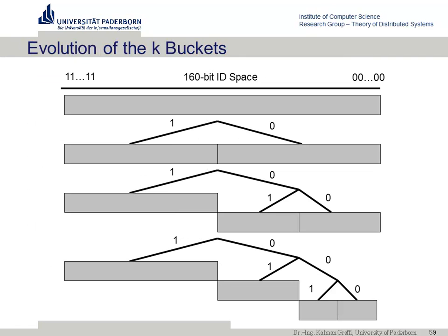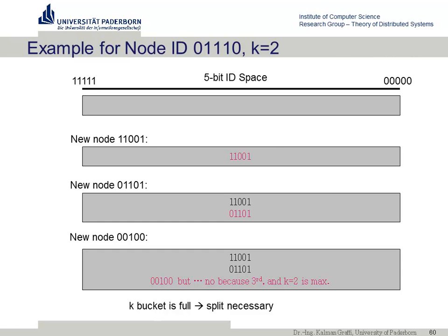The K-bucket structure evolves starting from one global bucket. When a bucket becomes overfull, it splits. For example, a node with ID 001110 and K=2: initially all contacts go into one bucket; when it fills, split into a bucket for prefix 1 and a bucket for prefix 0. When those fill, only the bucket corresponding to your own ID branch splits further. A node only needs more detail about the branch of the tree corresponding to its own ID.